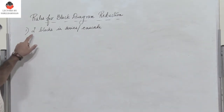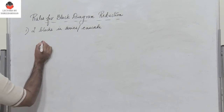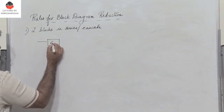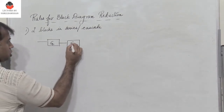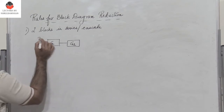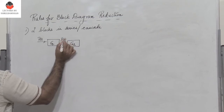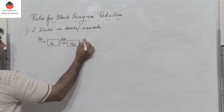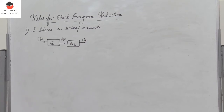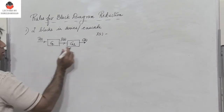The first rule is: if two blocks are connected in series or in cascade. Let us consider two blocks with transfer functions g1 and g2, with the input being r of s, the intermediate signal x of s, and the output c of s. If two blocks are connected in series, x of s is equal to r of s into g1.